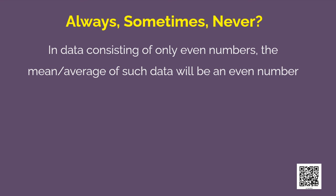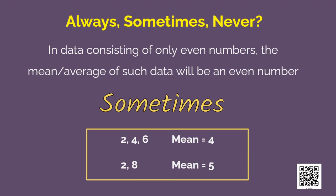In data consisting of only even numbers, the mean or average of such data will be an even number. Again, sometimes yes and sometimes no. Look at these examples. Here, in the first group of data, the mean is an even number. Whereas, in the second group of data, the mean is an odd number.